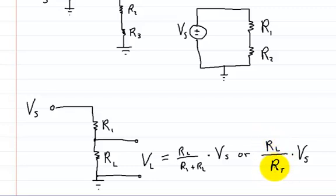And then it's just really divided by the total voltage, or the total resistance, I'm sorry. So that's the resistance you want, which was RL in this case, divided by the total resistance of the circuit. So that's what this is here.